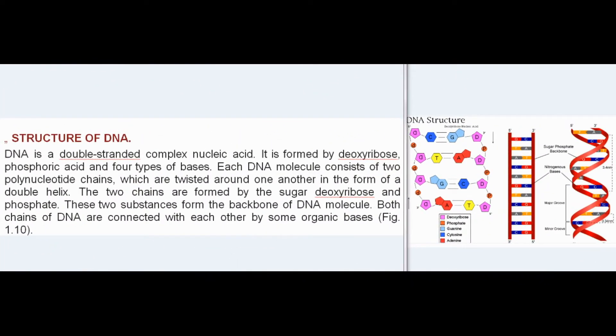DNA is a double-stranded complex nucleic acid formed by deoxyribose, phosphoric acid, and four types of bases. Each DNA molecule consists of two polynucleotide chains twisted around one another in the form of a double helix. The two chains are formed by the sugar deoxyribose and phosphate, which form the backbone of the DNA molecule. Both chains are connected with each other by organic bases.